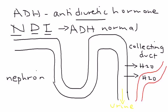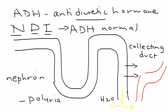This is different from central diabetes insipidus. In central DI, the pituitary doesn't release adequate amounts of ADH. In nephrogenic DI, you do have a normal amount of ADH being released from the pituitary, but the kidney is insensitive to it. So you essentially don't get reabsorption — the water just comes out into the urine. As a result, you get a lot of urine, which is polyuria, and the urine will be dilute because there's so much water coming out.